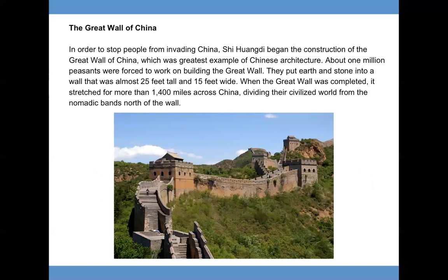In order to stop people from invading China, Shi Huangdi began the construction of the Great Wall of China, which was the greatest example of Chinese architecture. About one million peasants were forced to work on building the Great Wall. They put earth and stone into the wall that was almost 25 feet tall and 15 feet wide. When completed, it stretched for more than 1,400 miles across China, dividing their civilized world from the nomadic bands north of the wall.